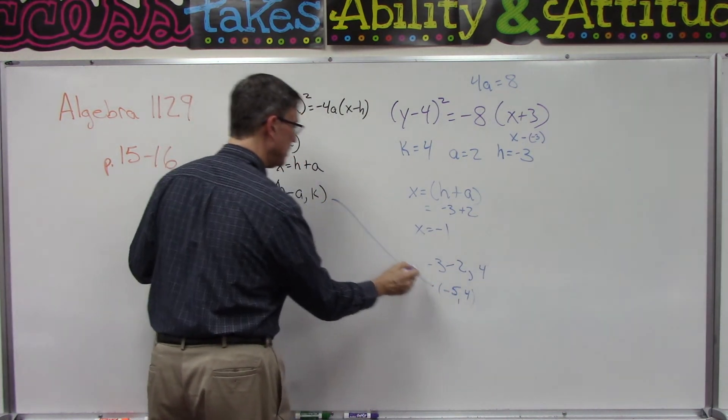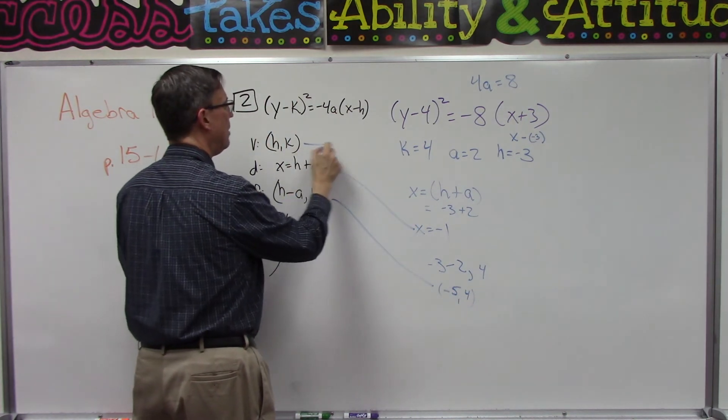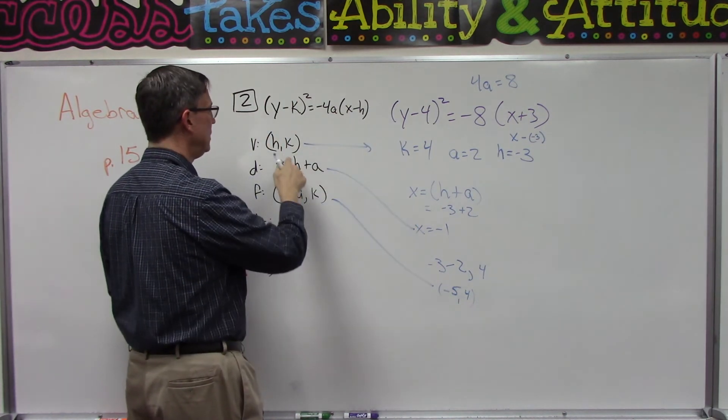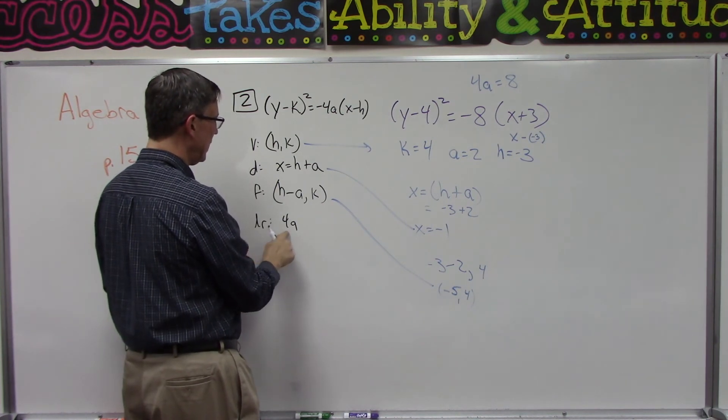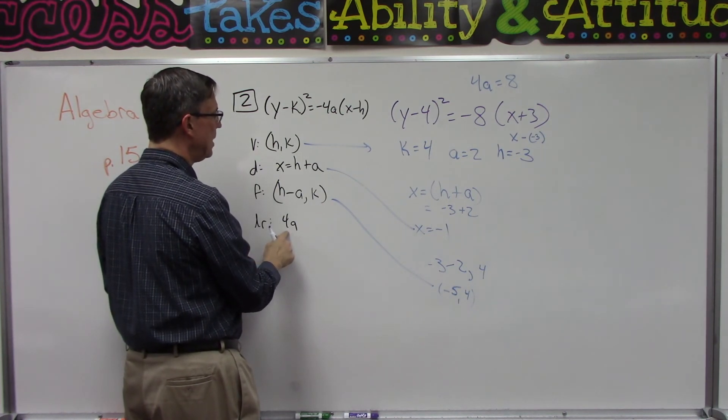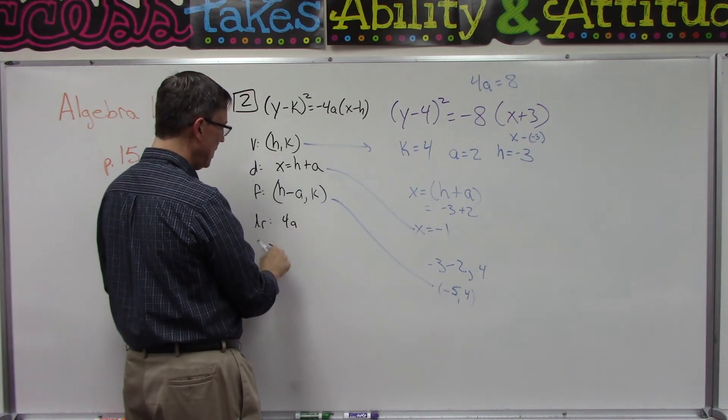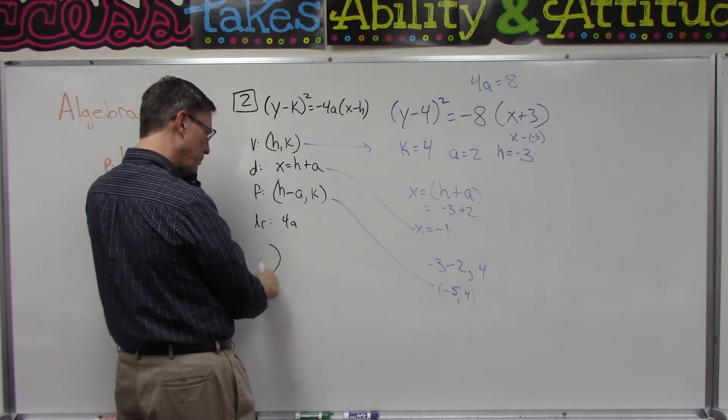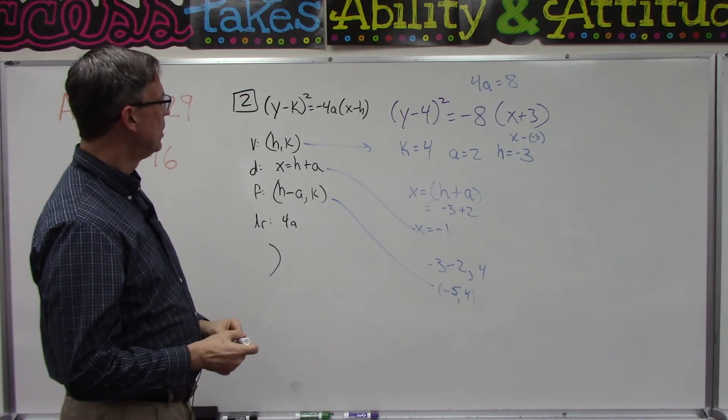This is the directrix. From here we can figure out what the vertex is. And then the latus rectum would be 4 times a, which is 2, so a distance of 8. And then it tells us that the shape is going to look like this.